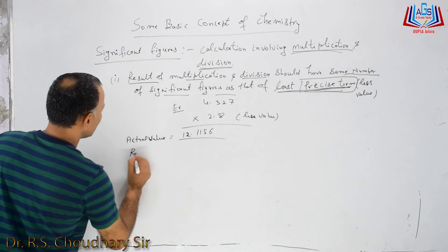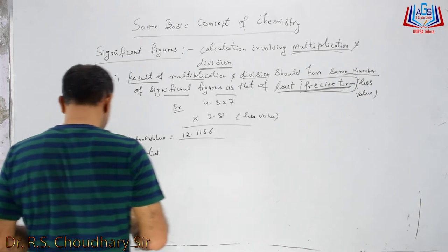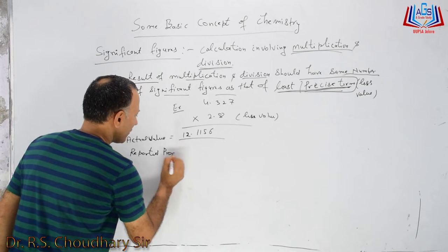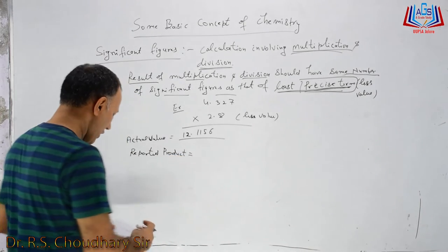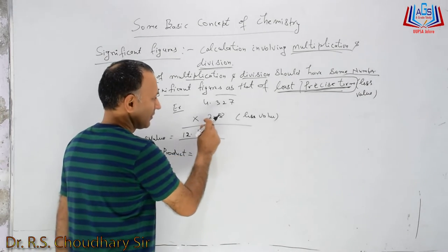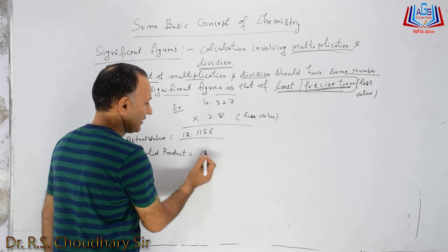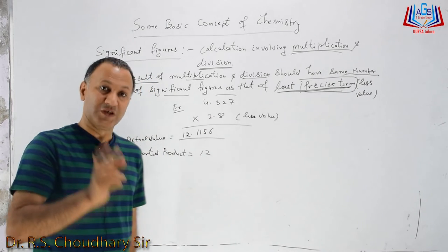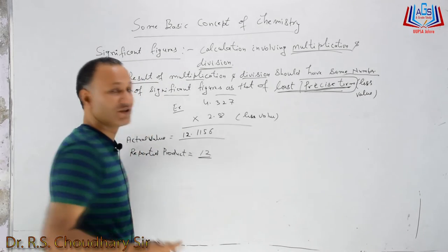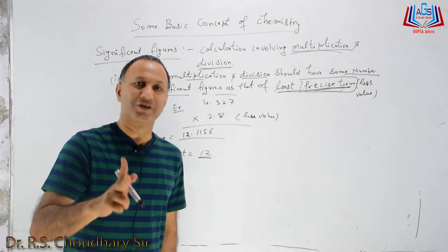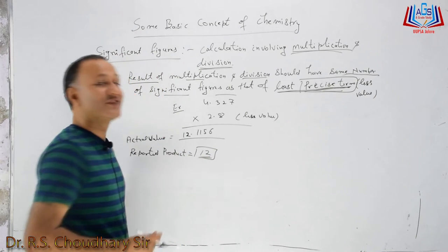But the reported value — what will the reported product be? How many significant figures will there be? There will be the same as the least value: 2 significant figures. So our final result must have 2 significant figures. Our result will be 12.